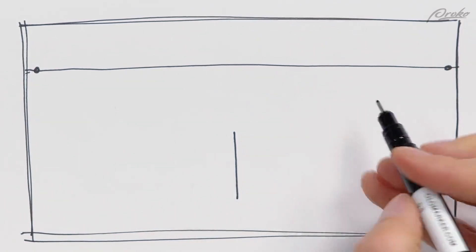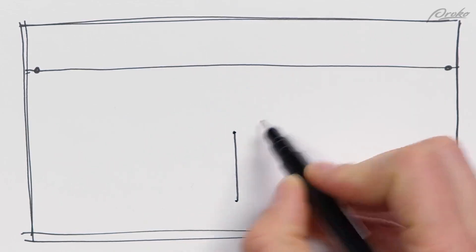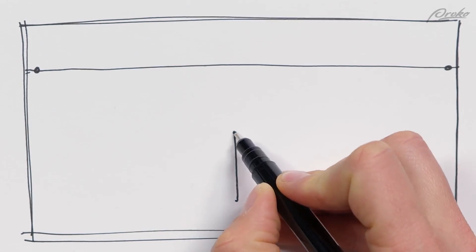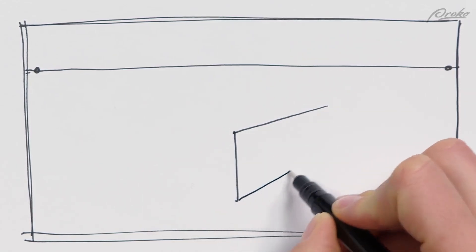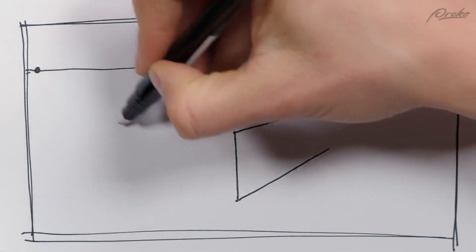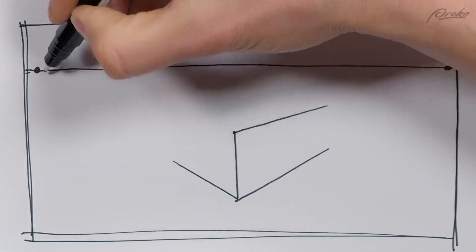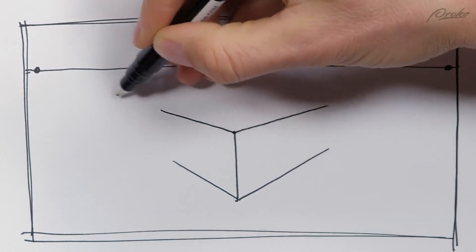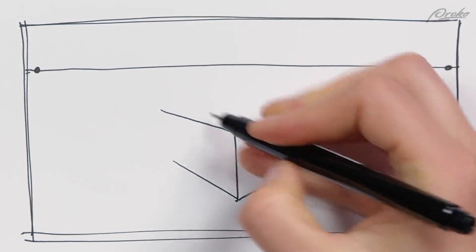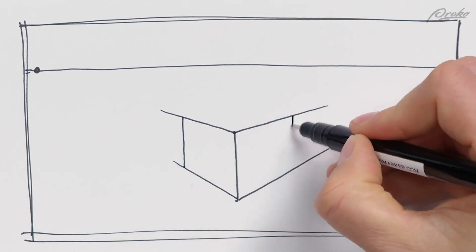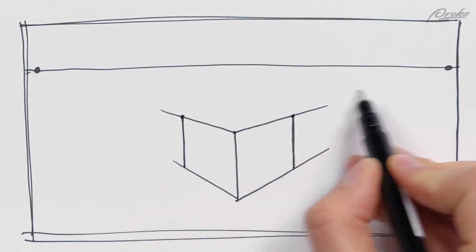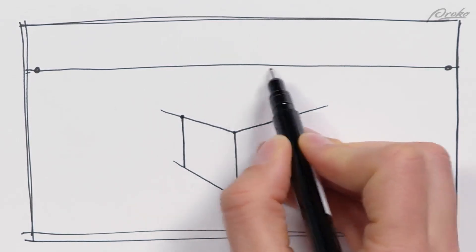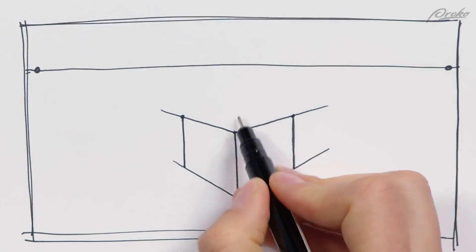I'm going to establish the closest edge right in the middle between the two points. From the two corners of that edge, I'm going to extend lines toward each vanishing point. I don't have to draw every line all the way to the vanishing point — I just have to imagine that if it continued, it would hit that point. Then I cut these off and establish the top plane by going from those corners and converging toward the horizon. The closer we get to the horizon line, the more eye-level things become and the more foreshortened they get.